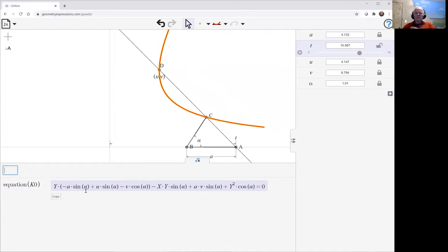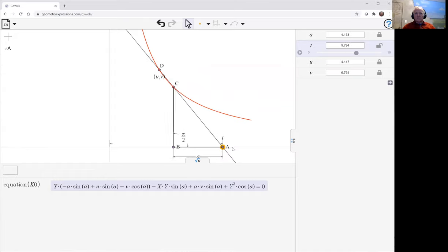We could make it a simpler equation if we made alpha at 90 degrees, make alpha pi by 2. We have a somewhat different curve. Let's have a look at this equation.